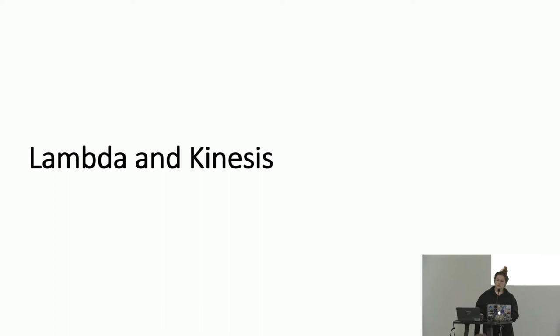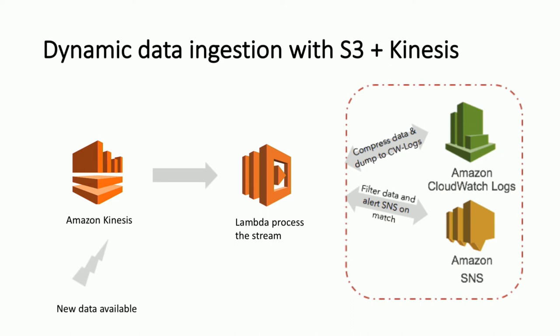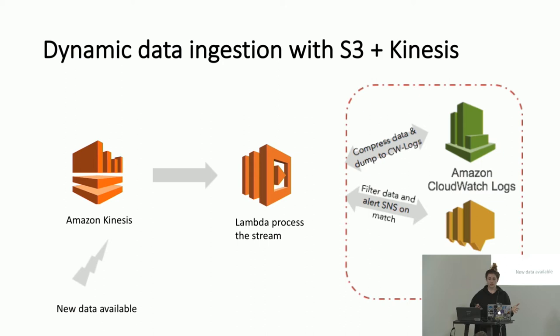Lambda and Kinesis — streaming. Another flow showing data ingestion with S3 and Kinesis: new data is available, it goes to Kinesis, Lambda processes the stream in Kinesis, and we take two actions. We compress the data and dump it to CloudWatch logs, and we filter the data and alert SNS. Lambda is watching Kinesis, runs in response to new data, sends the data to CloudWatch logs, then filters looking for something specific before alerting SNS.